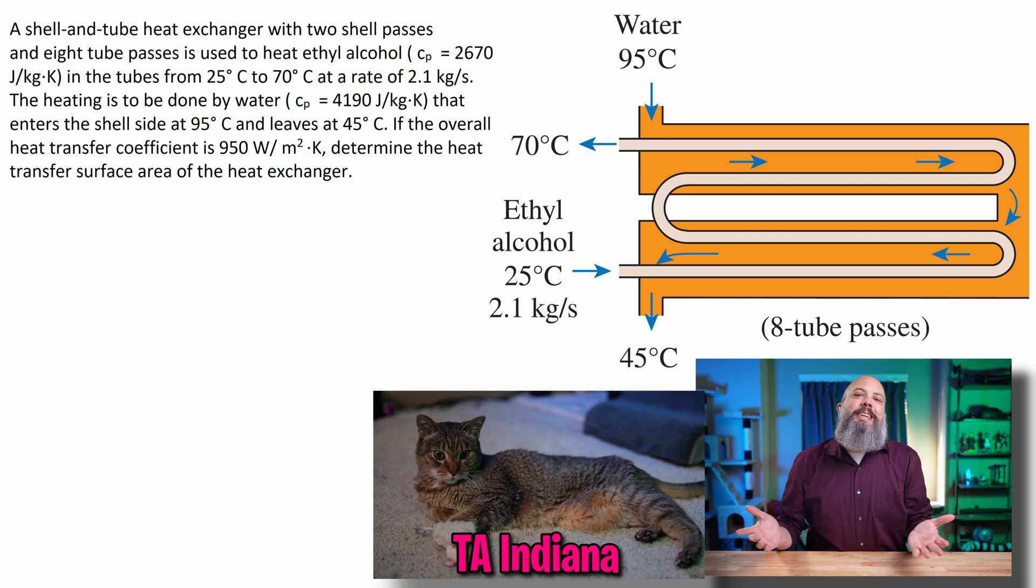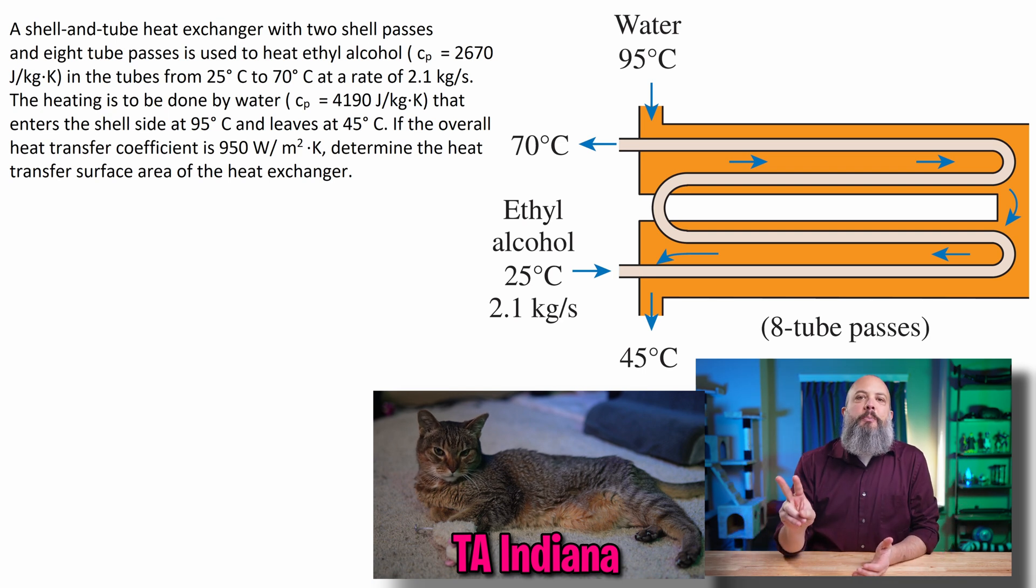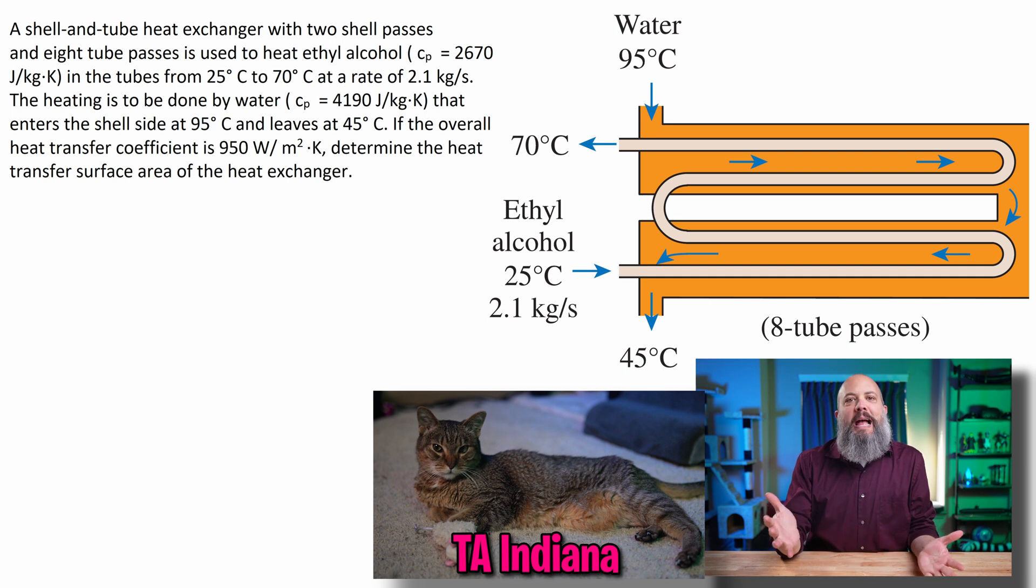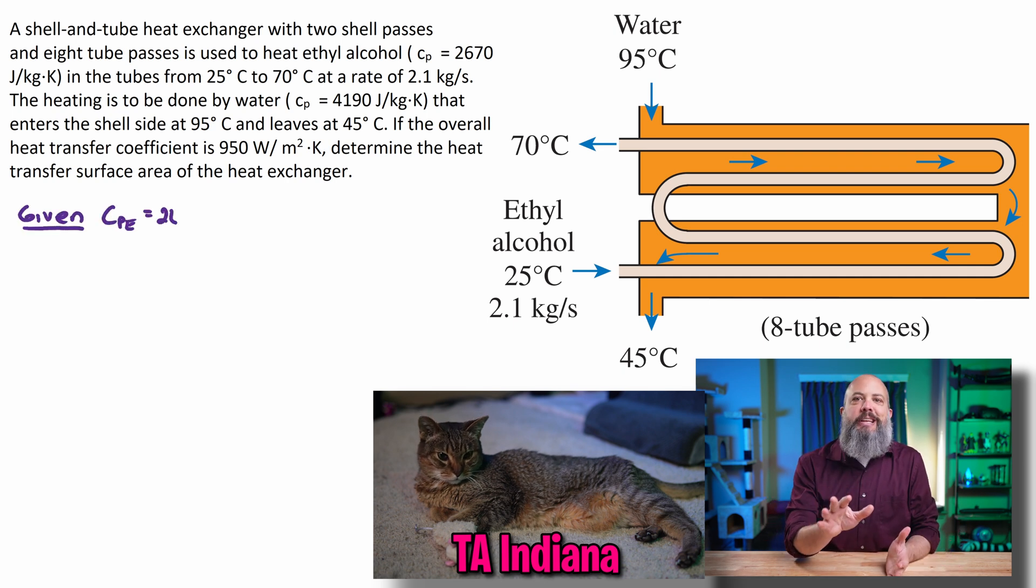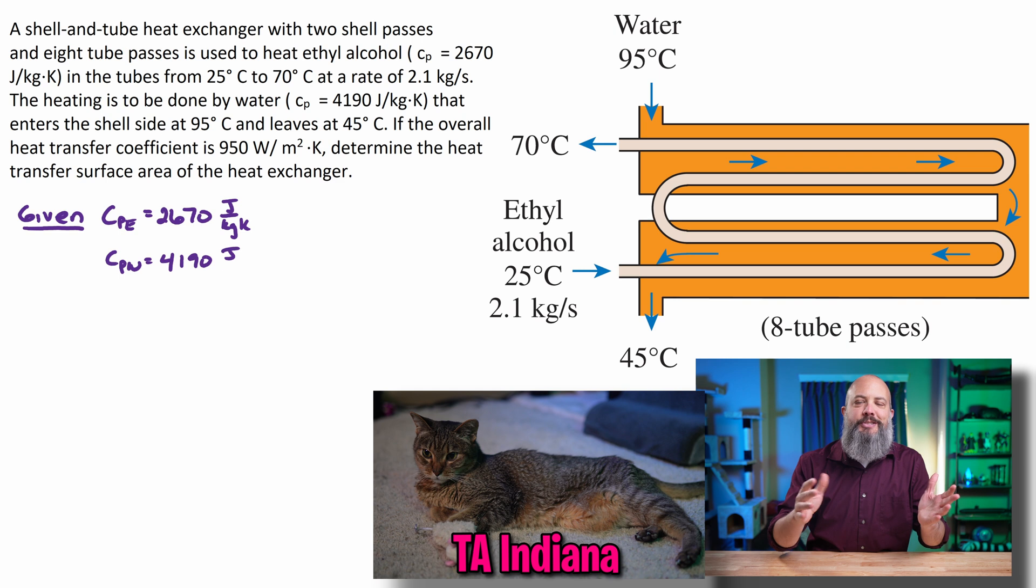We've got a shell and tube heat exchanger with two shell passes and eight tube passes. Even though the figure looks like there's only four, there's actually eight. It's just the drawing would get really crowded if you drew all of them.